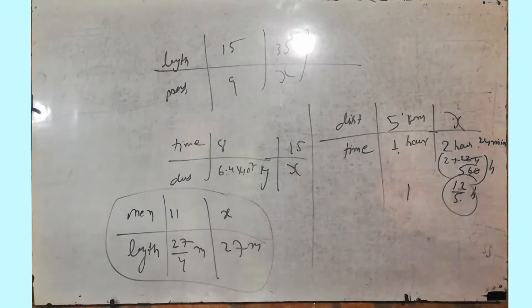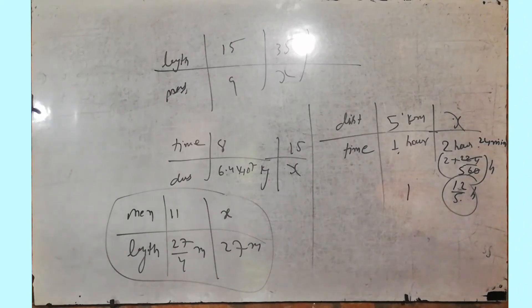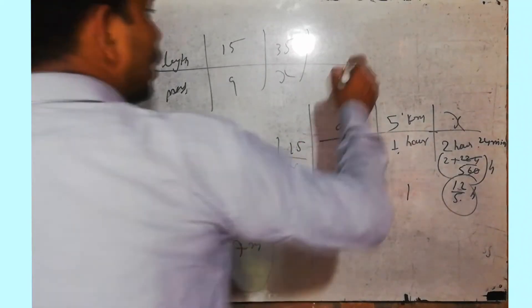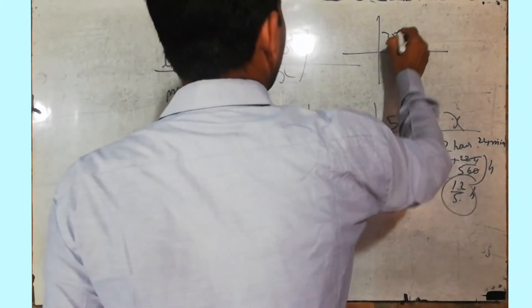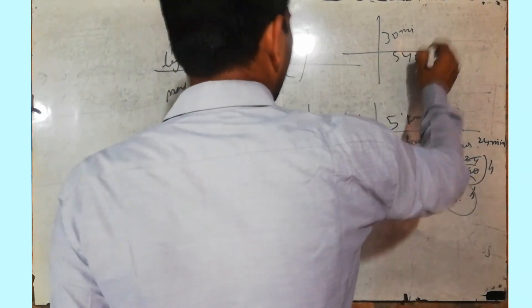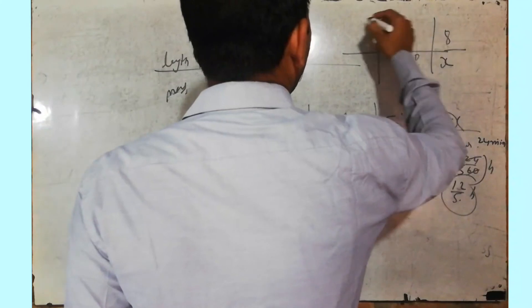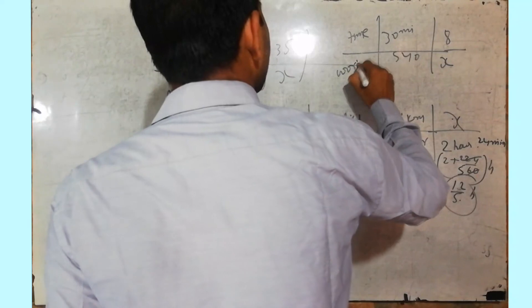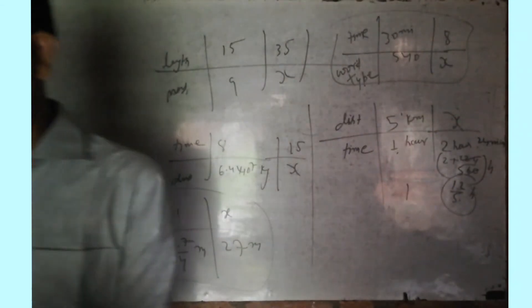Last question: Renu types 540 words in half an hour. How many words does she type in 8 minutes? Half an hour means 30 minutes and 540 words. Set up a table — time and words typed: 30 minutes gives 540 words, 8 minutes gives X words. Solve using direct proportion. This was a very easy chapter and it is now complete.